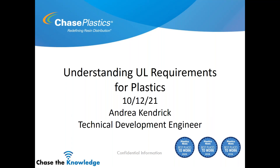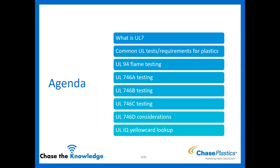Good afternoon everybody. Hope all is well. We'll go ahead and get started talking about understanding UL requirements for plastics. Our agenda for today: we're going to go over what UL is, some common tests and requirements for plastic materials, and then go deeper into specific tests — UL 94 flame rating, UL 746A, B, and C. We'll talk about some considerations and then finally where to find a yellow card, which is essentially the certification showing all of the testing for materials that have been approved.